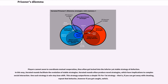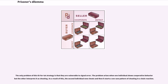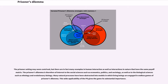Players cannot seem to coordinate mutual cooperation, thus often get locked into the inferior yet stable strategy of defection. In this way, iterated rounds facilitate the evolution of stable strategies. Iterated rounds often produce novel strategies, which have implications for complex social interaction. One such strategy is win-stay-lose-shift, which outperforms a simple tit-for-tat strategy — that is, if you can get away with cheating, repeat that behavior; however, if you get caught, switch. The only problem with tit-for-tat strategies is that they are vulnerable to signal error. The problem arises when one individual shows cooperative behavior but the other interprets it as cheating, and then a chain reaction of cheating begins.